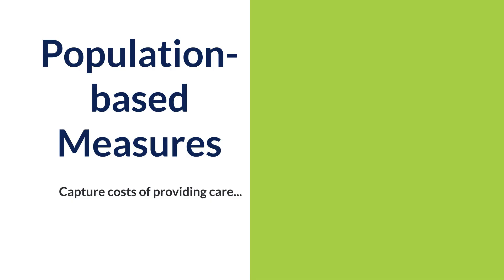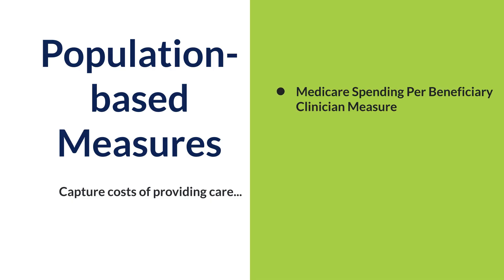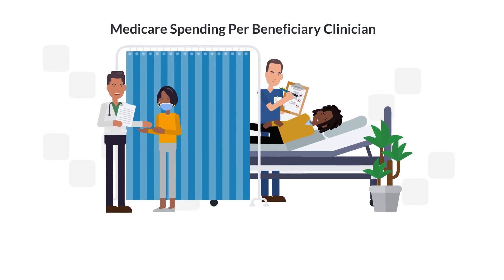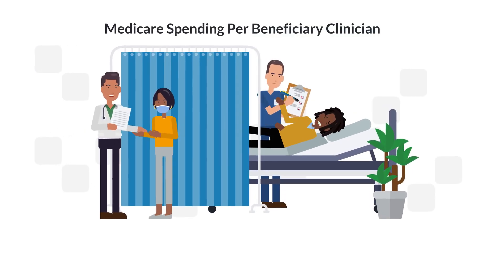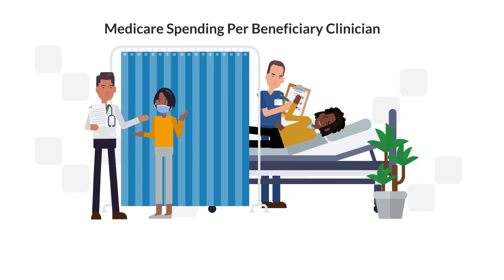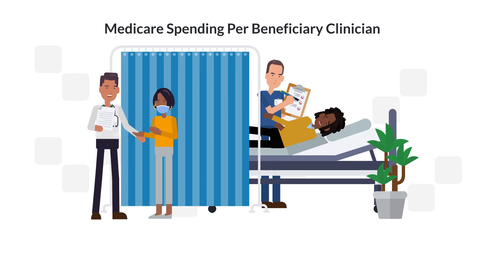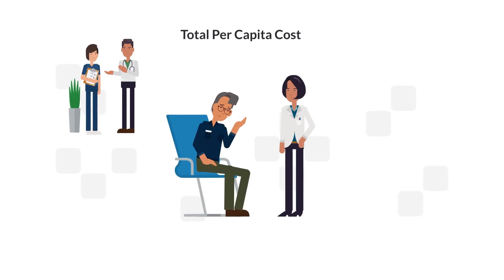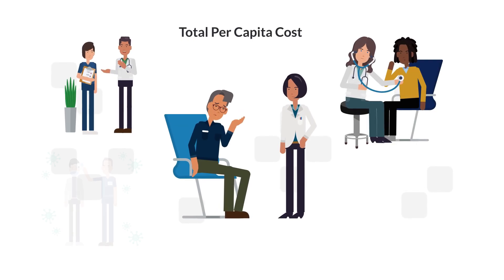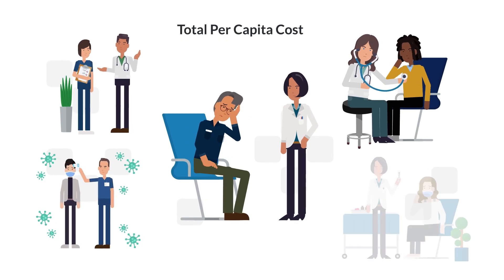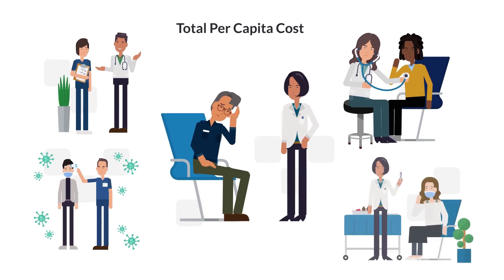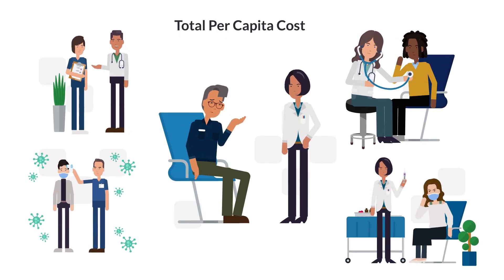There are two population-based measures that more broadly capture the cost of delivering care to patients. The Medicare Spending Per Beneficiary clinician measure looks at costs for services provided immediately prior to, during, and following an inpatient hospitalization. The Total Per Capita Cost measure looks at the overall cost of care, with a focus on evaluating clinicians who provide primary care and ongoing care management.